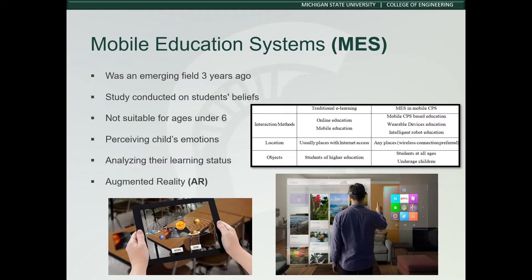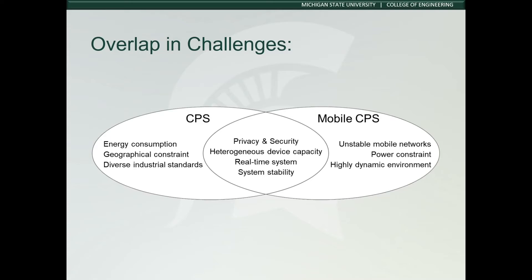E-learning is not suitable for children under the age of six because at such an early age, it is hard for them to concentrate on systematic courses and interact with instructors through the web. The sensing capabilities of mobile education systems benefit from seamlessly sensing the data of when your child is interacting with the physical world, such as recognizing objects around them. Analyzing this data shows you can perceive children's emotions and learning statuses. An example of mobile e-learning would be through the usage of augmented reality headset devices, where you can seamlessly integrate visual interfaces and information from the cyber world pervasively with the physical world.